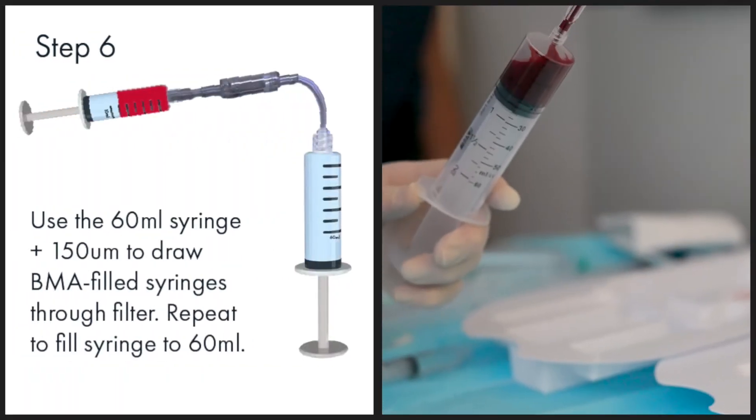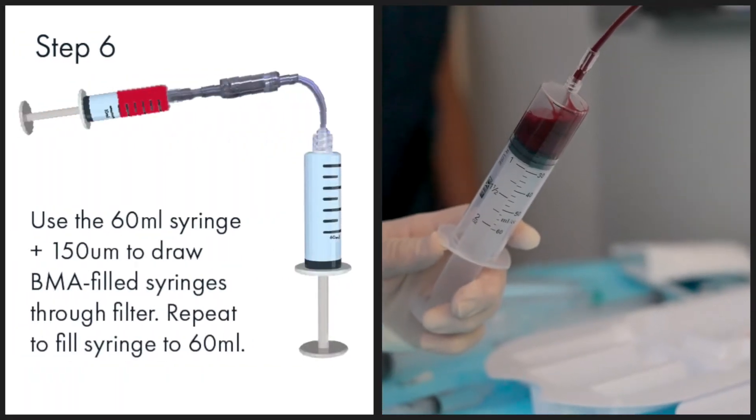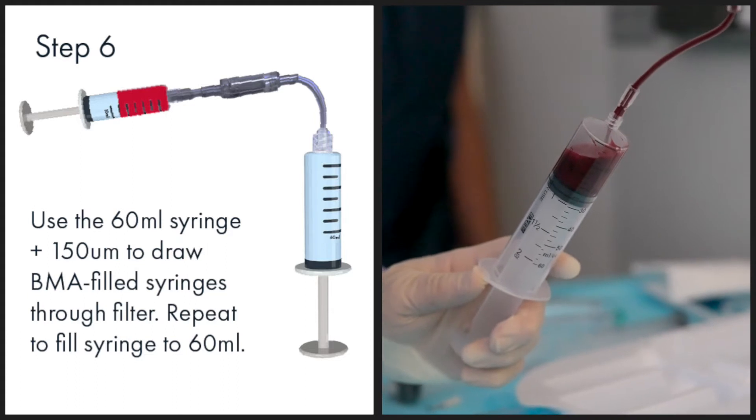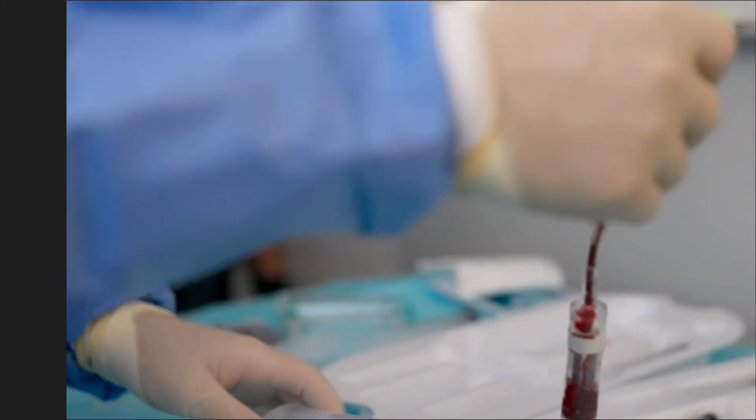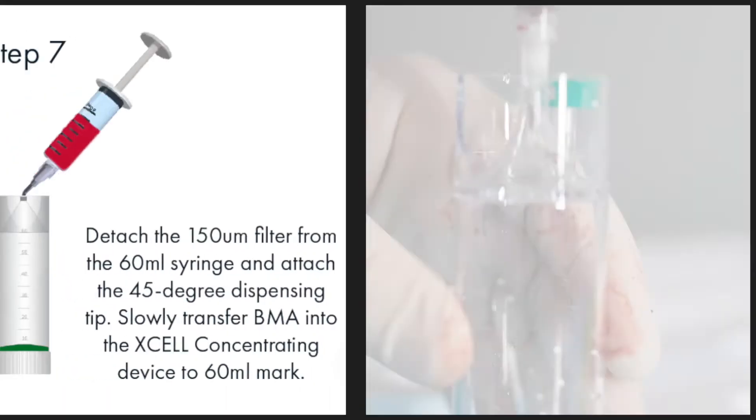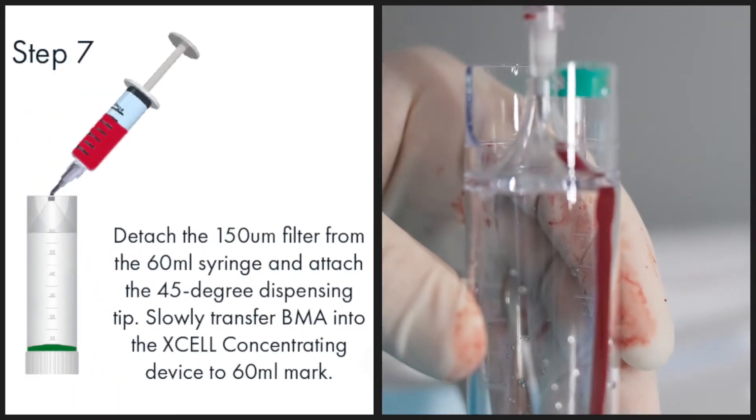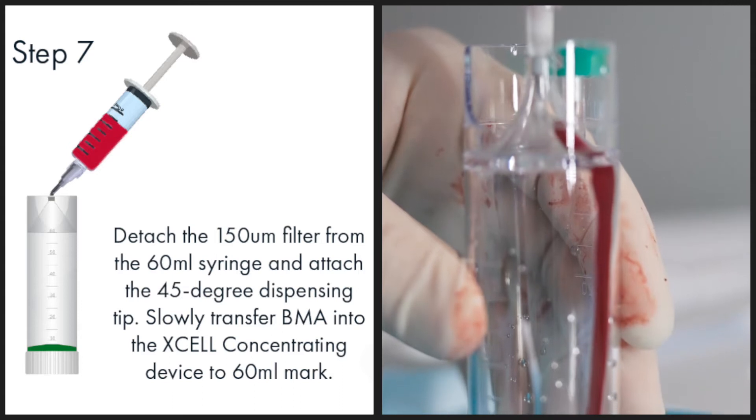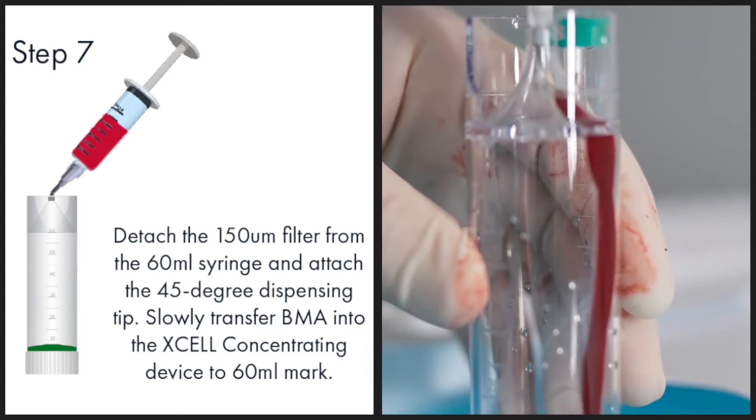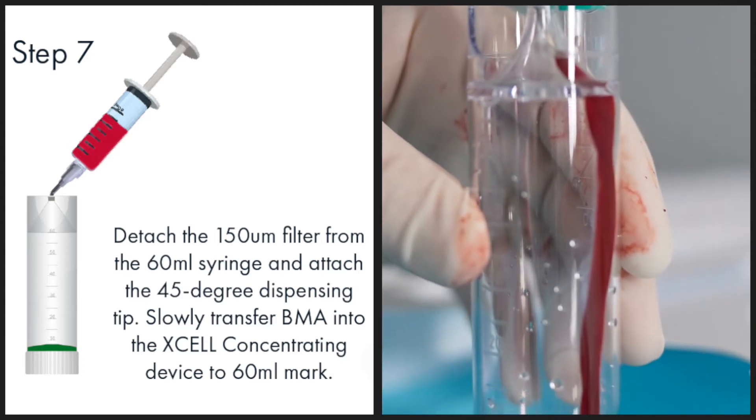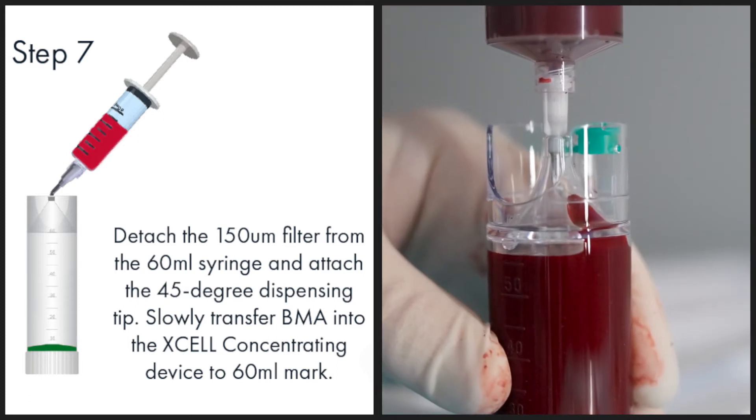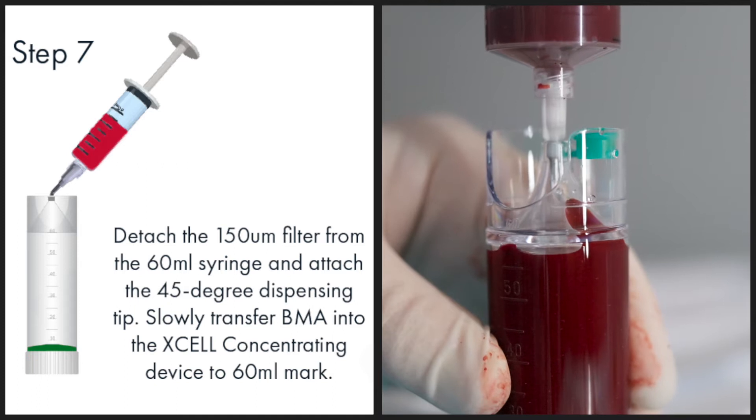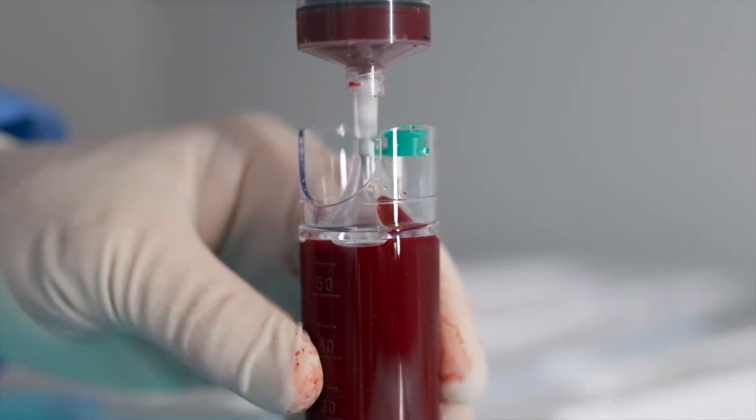Use the 60 milliliter syringe with the filter to draw all of the 10 milliliter bone marrow aspirate filled syringes through the filter to fill the 60 milliliter syringe. Detach the filter from the 60 milliliter syringe and attach the 45 degree dispensing tip. Slowly transfer the bone marrow aspirate into the XL concentrating device to the 60 milliliter mark.